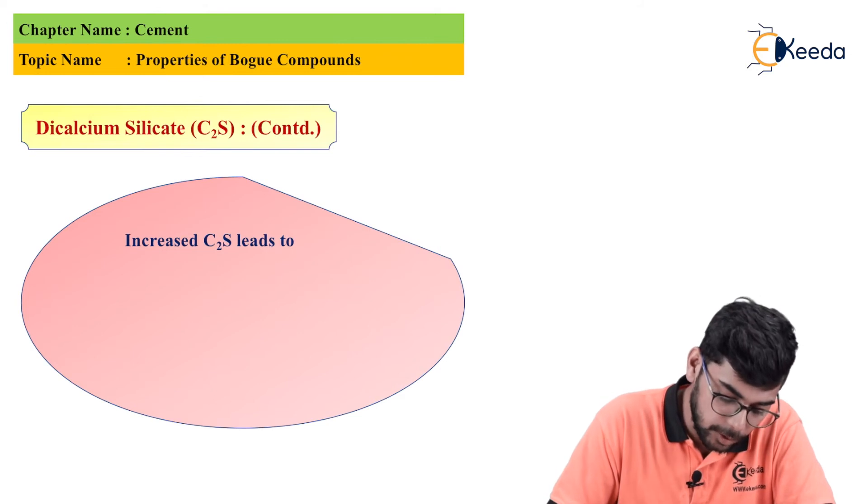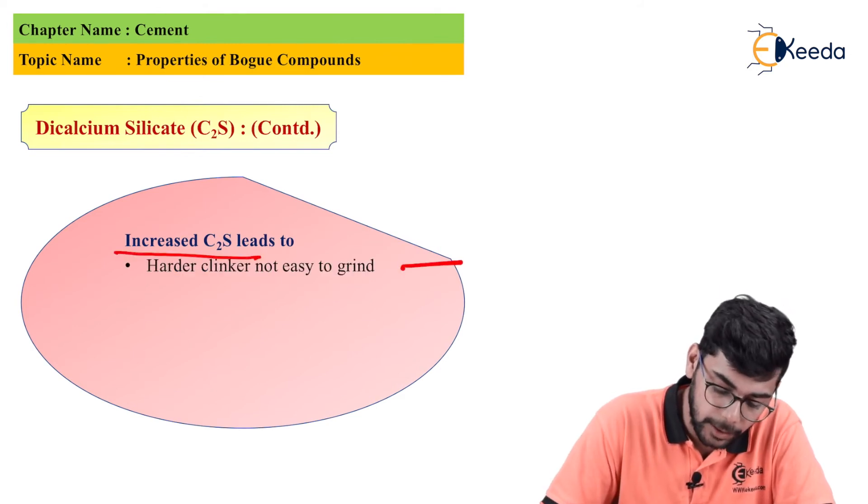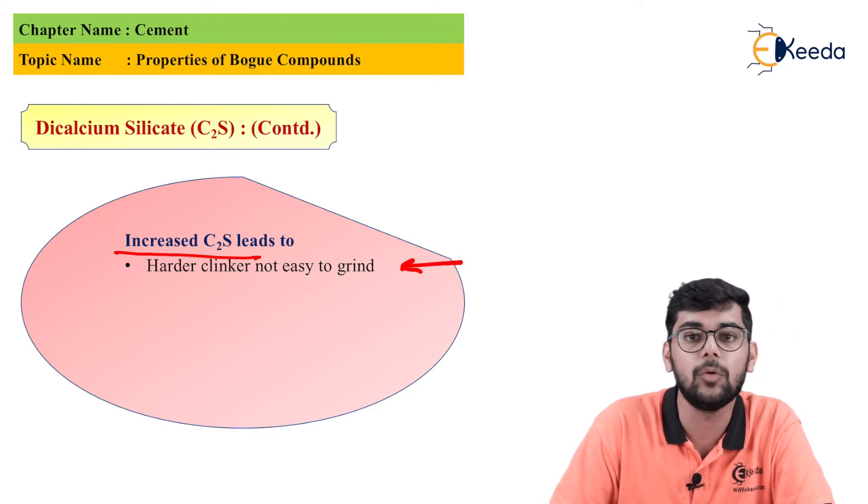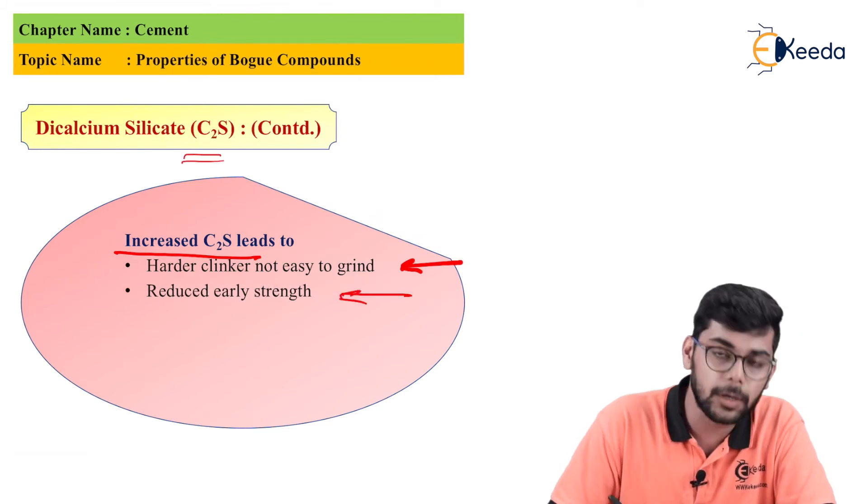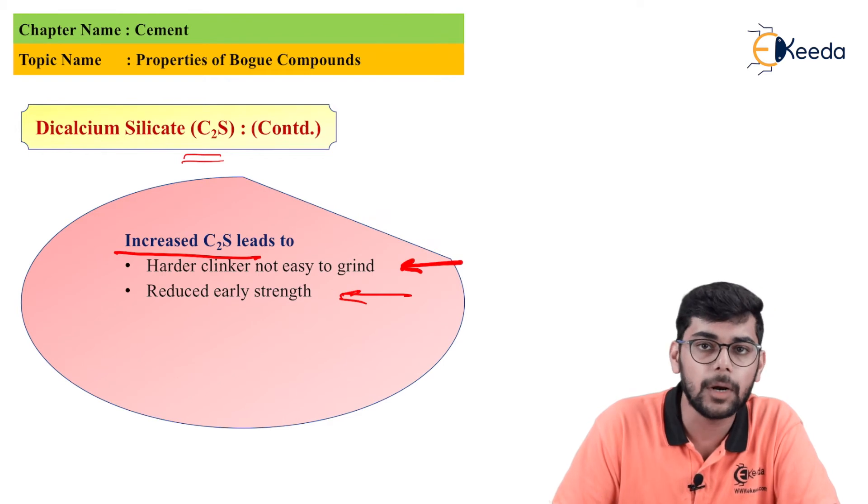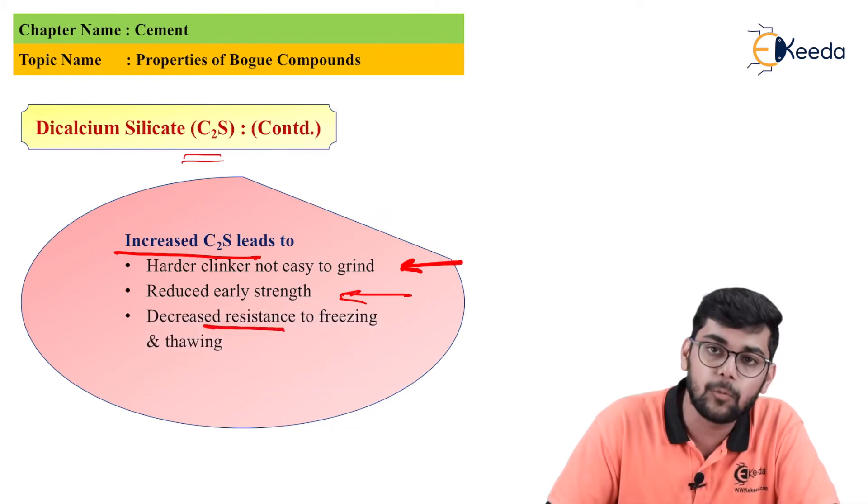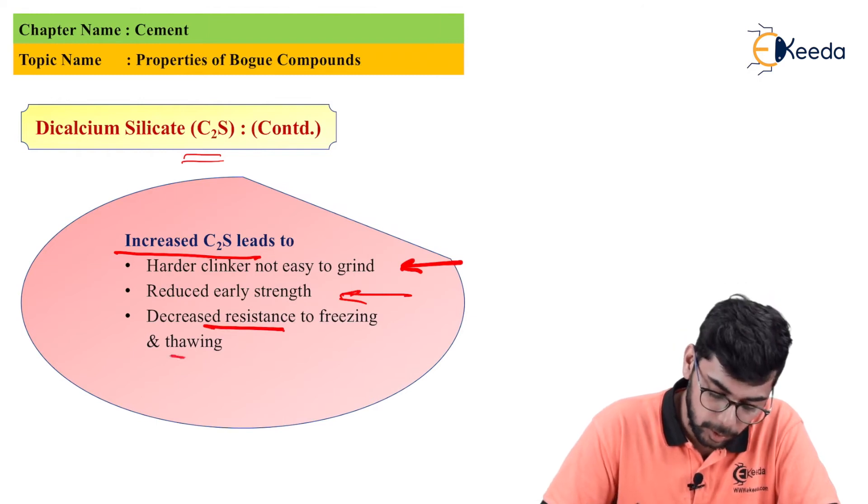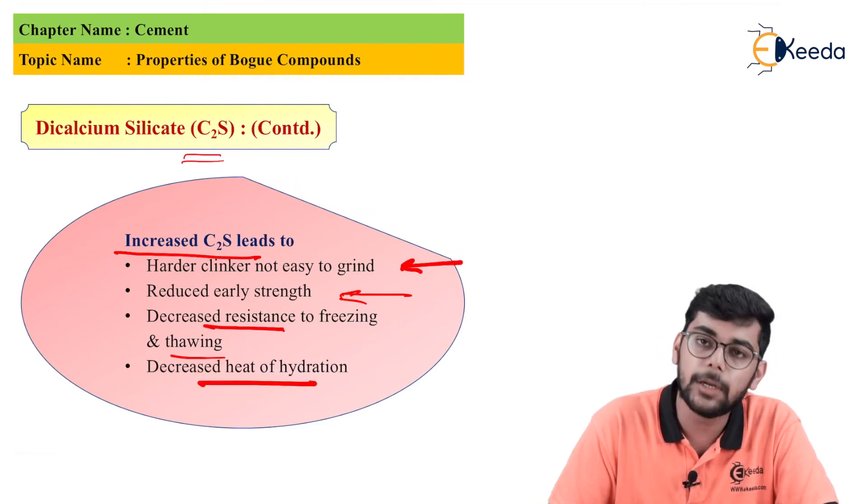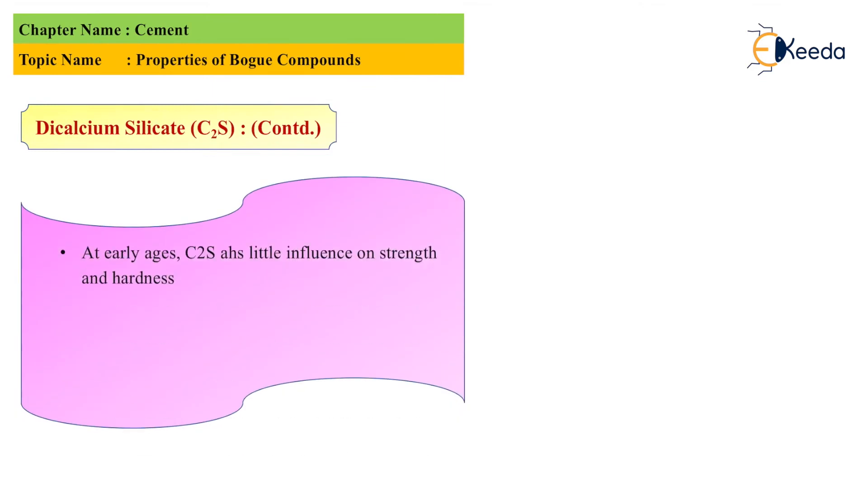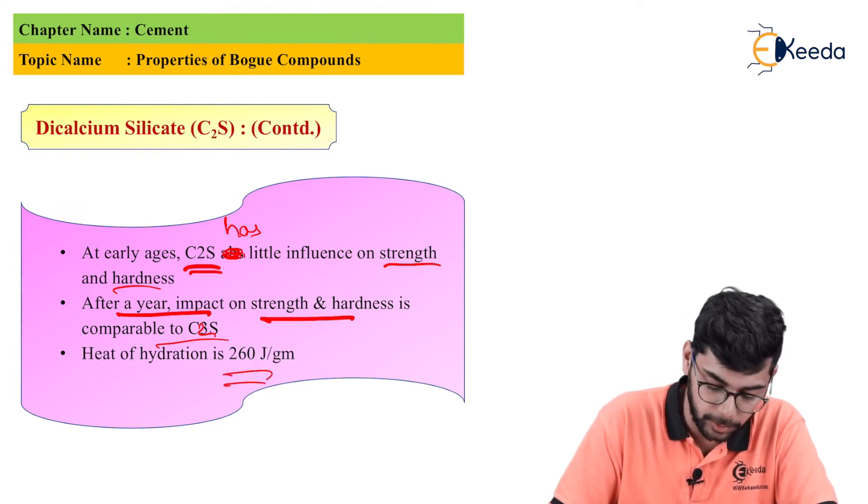But if there is increase of C2S it would lead to hard clinker and it's not easy to grind them. Also excess of C2S would cause reduced early strength because it is responsible for ultimate strength, and it would reduce the resistance to freezing and thawing. It could benefit in the form of decreased heat of hydration. At early age C2S has very less influence on strength and hardness but it impacts strength after one year. The heat of hydration of C2S is 260 joules per gram.